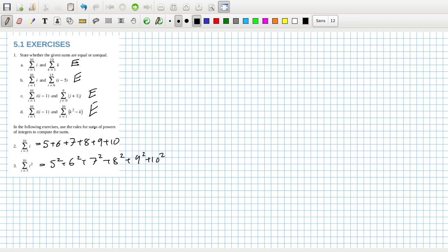Use the rules for the sums of powers of integers to compute the sums. I don't know if that's saying to use the rules for arithmetic and geometric progression, but that would seem mad to me because it's only going from five to ten. That's three five five ten nine eight seven six five, that's 45.